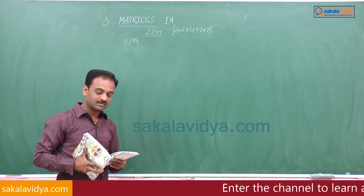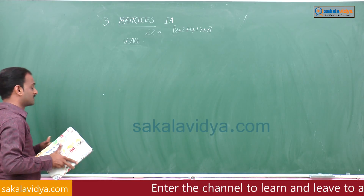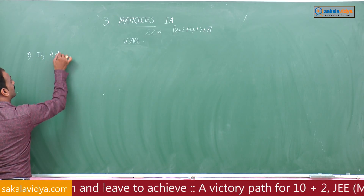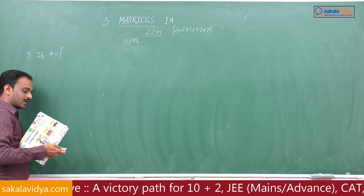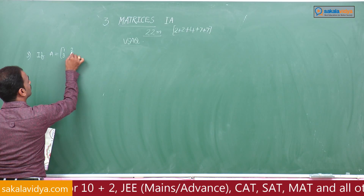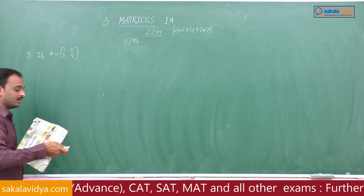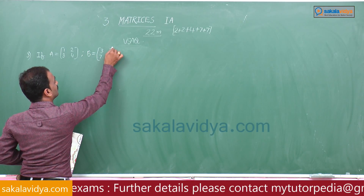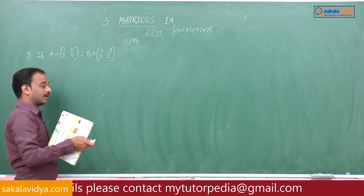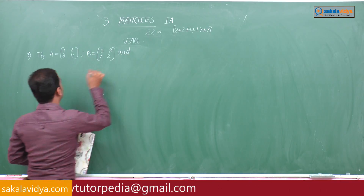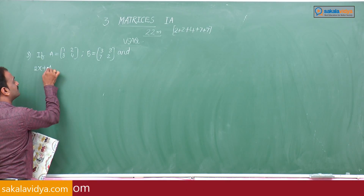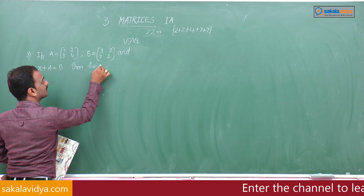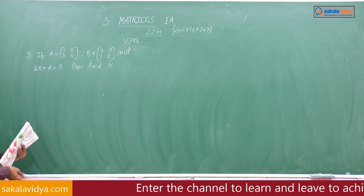Problem number 3: If capital A equals [1, 2; 3, 4] and capital B equals [3, 8; 7, 2], find capital X.